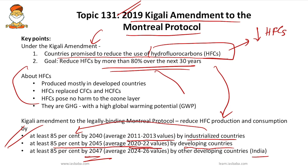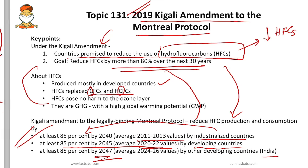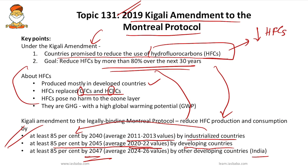HFCs are produced mostly in developed countries and were introduced to replace CFCs and HCFCs. HFCs do not contain chlorine, so they do not harm the ozone layer. However, HFCs are potent greenhouse gases with high global warming potential — more potent than CFCs and HCFCs — which is why they need to be reduced under the Kigali Amendment.